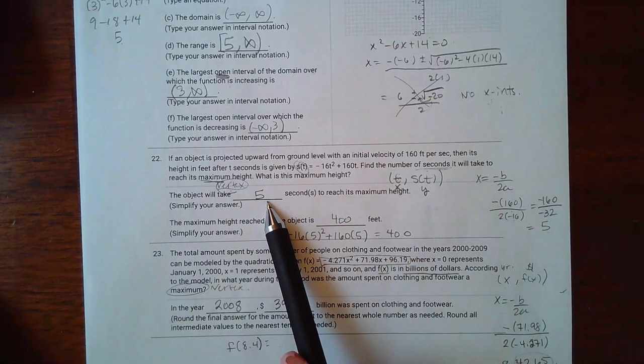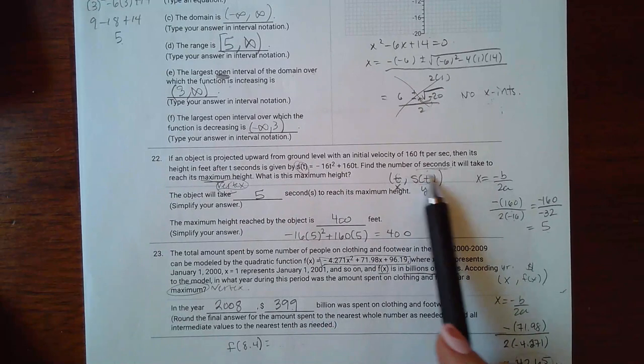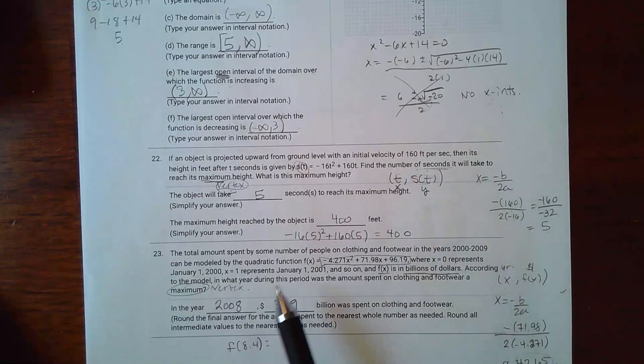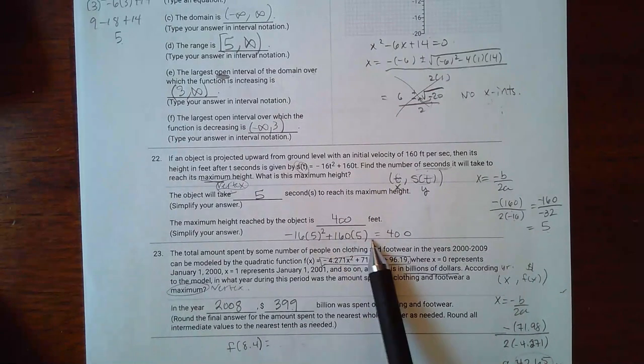Now the next question is saying what is the maximum height? Remember this is the height, so I actually have to calculate the y value. So I plugged in 5 for the t and I computed that it was 400. So what is the maximum height? 400 feet.